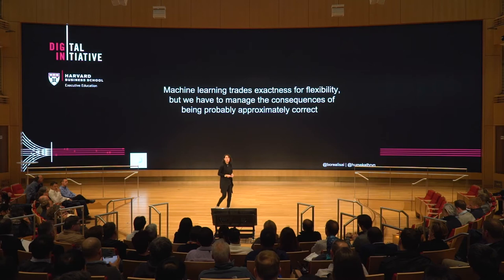Pay attention to that. When we move from rules to systems that make probably approximated guesses, you can imagine there might be implications for an enterprise. For the rest of the talk, I'll provide three rules of thumb you need to think about in managing regulatory or sensitive ethical issues you might face when using these systems with your customers.